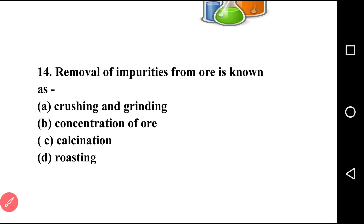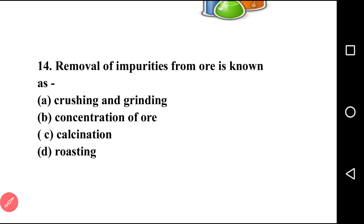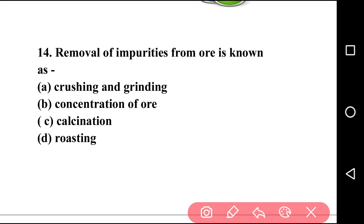Going to next question, that is question number fourteen: removal of impurities from ore is known as? First option: crushing and grinding. Second option: concentration of ore. Third option: calcination. Last option: roasting. The answer is option B, concentration of ore, because removal of impurities from ore is called concentration of ore.